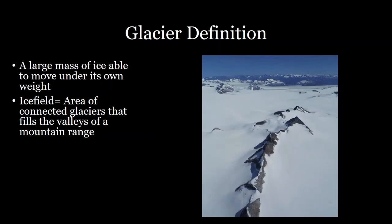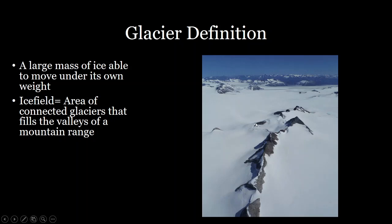The next definition, slightly larger than just a single glacier, is an ice field. This is a picture I took of the Juneau ice field. An ice field is an area of connected glaciers that fill the valleys of a mountain range. You can see here that ice is filling up all of the valley areas, but the peaks are still poking out with exposed rock faces as a result.